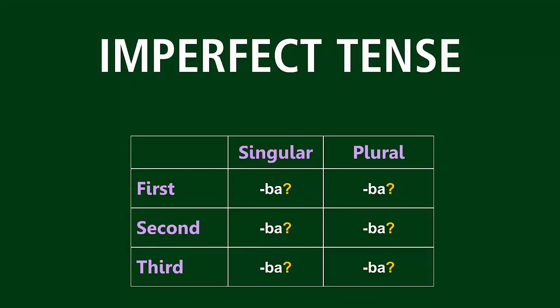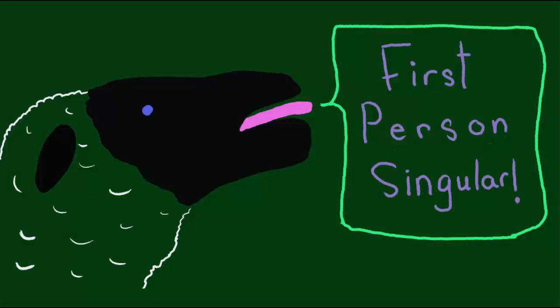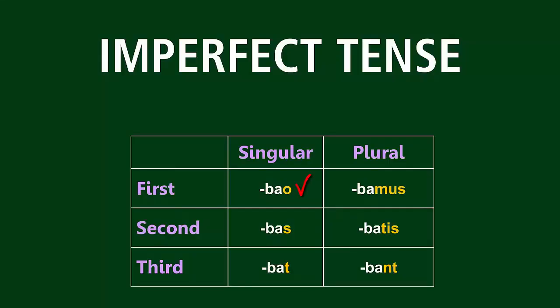But wait, if that's all you do, one of these endings looks a little weird — just a little bit off. Which one looks weird to you? First person singular. Right, the first person singular is the one that's a little bit off.